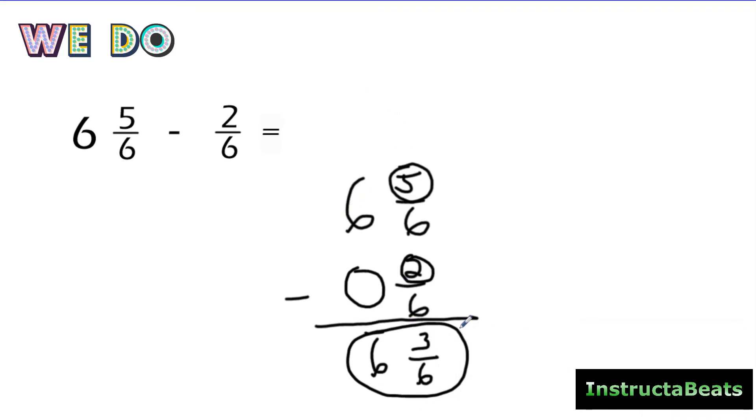So the answer to this is 6 3/6. You could also simplify that if you wanted to to 6 1/2. Again, if you don't know how to simplify, don't worry about it. That's not the point of this lesson. But for those who do, we always want you to take that extra step. So pretty easy. Same exact steps, except you can just put a zero for your whole number if you don't have one.